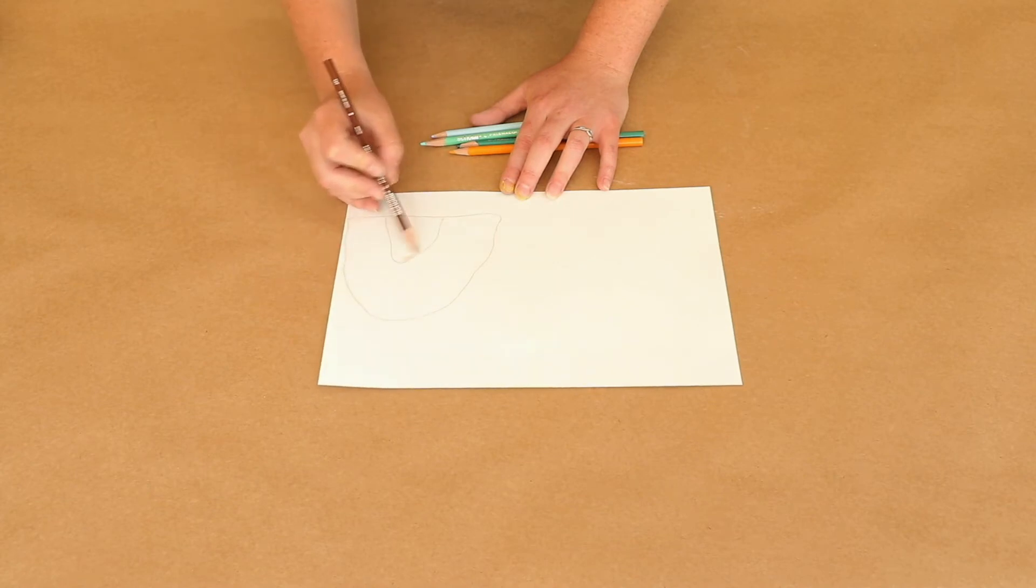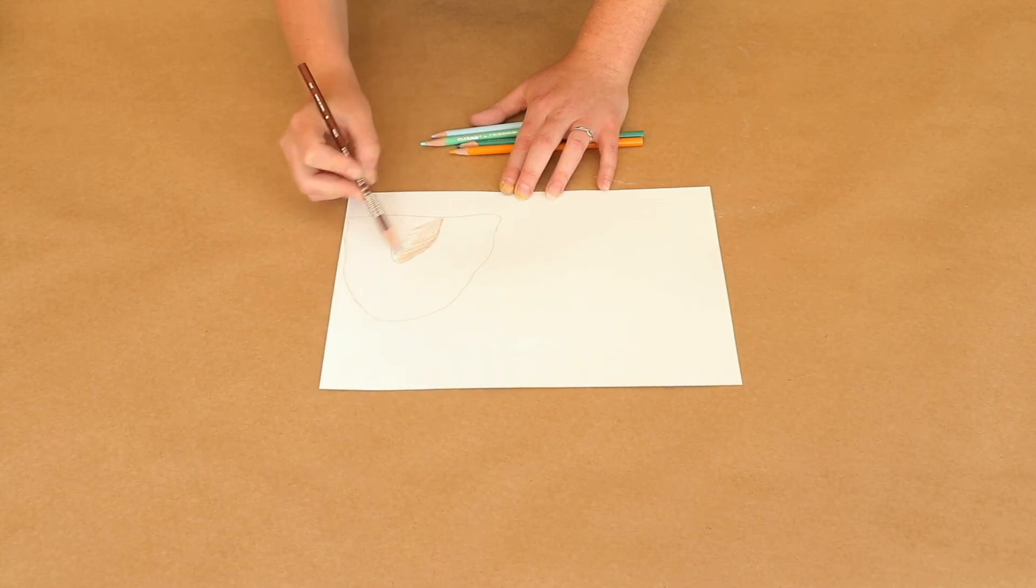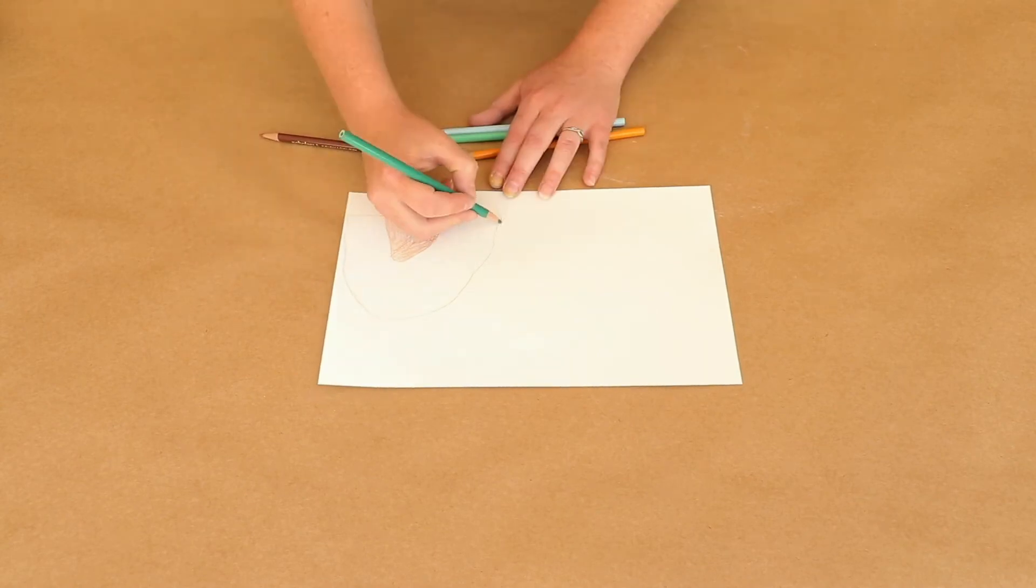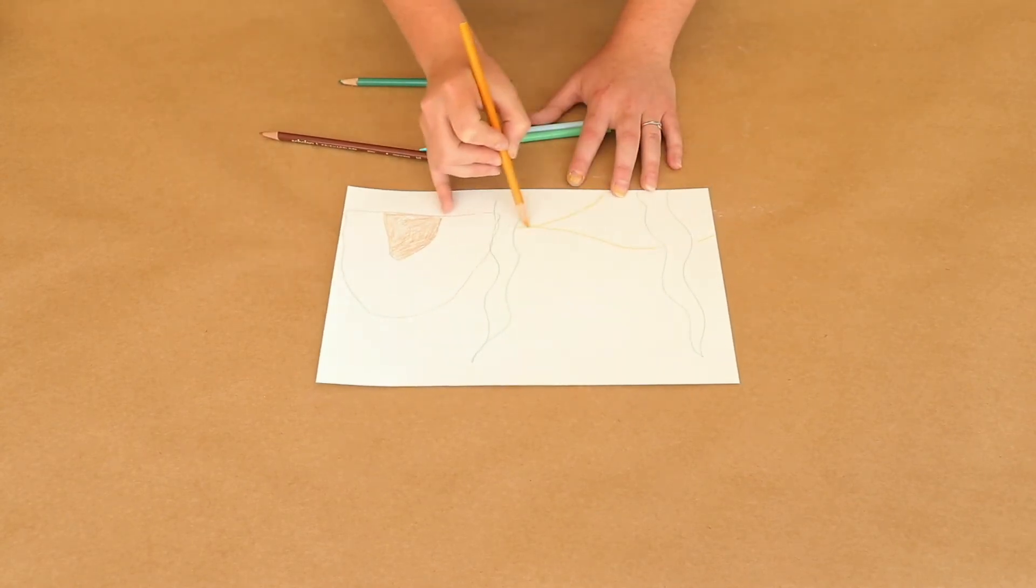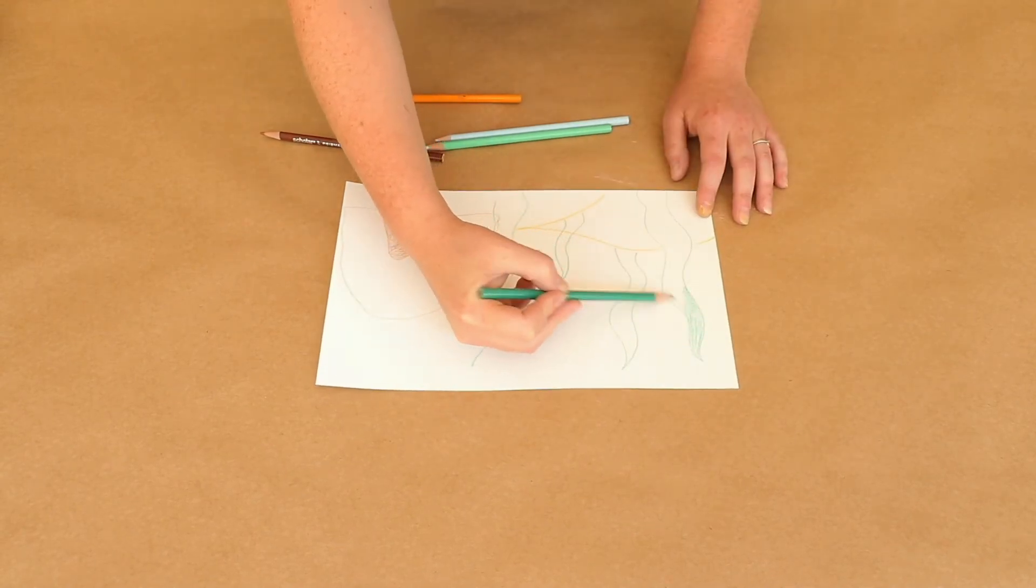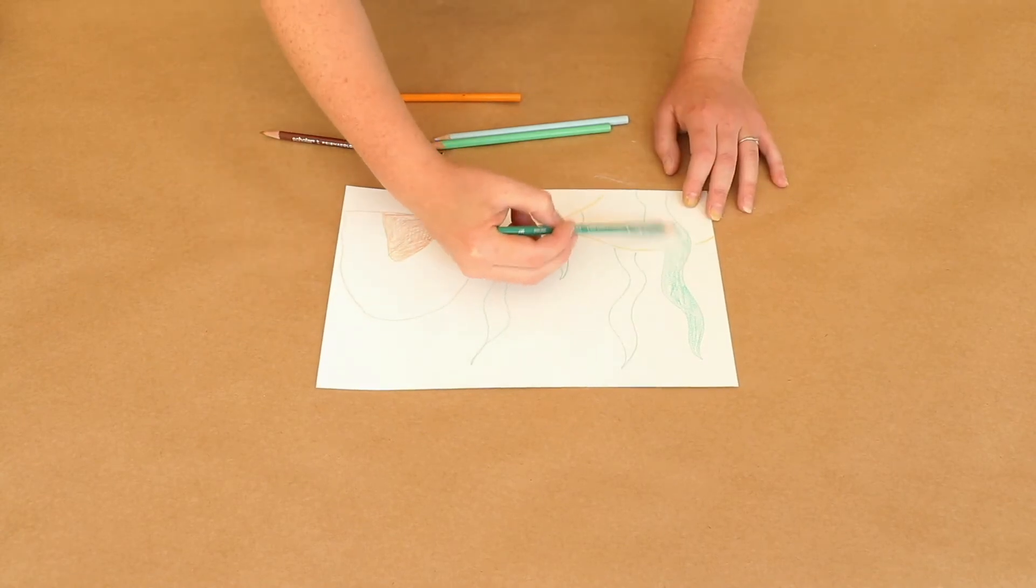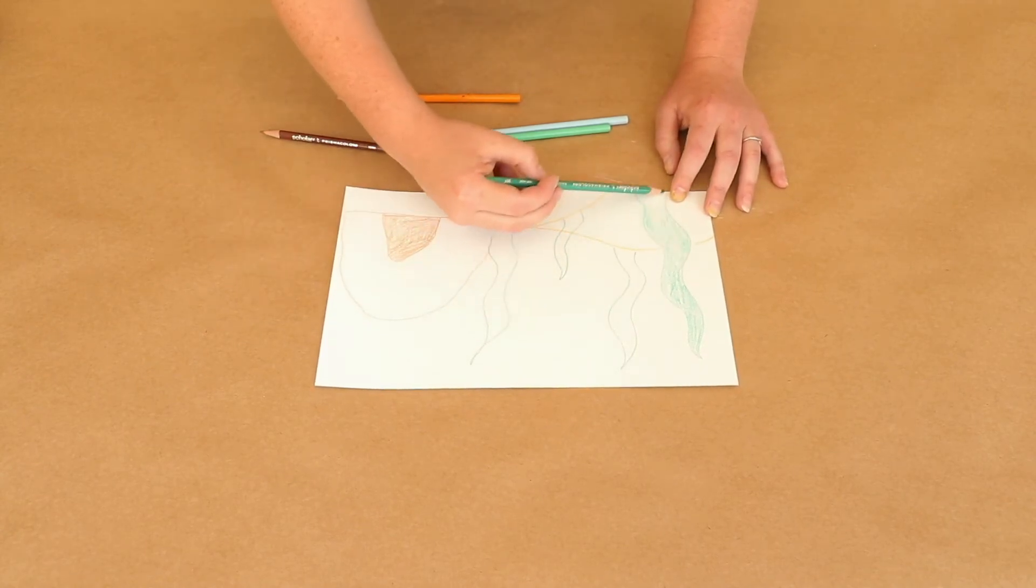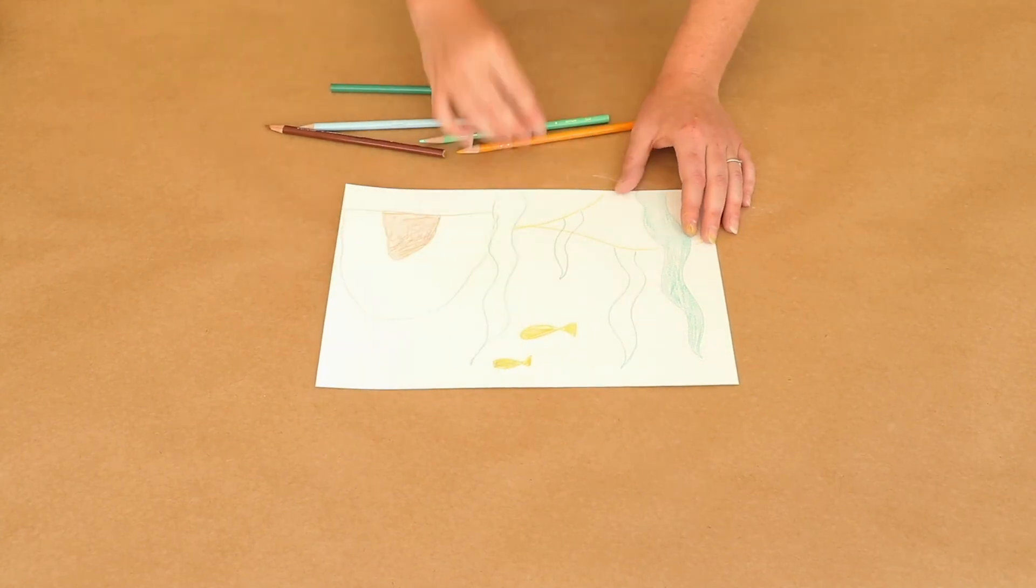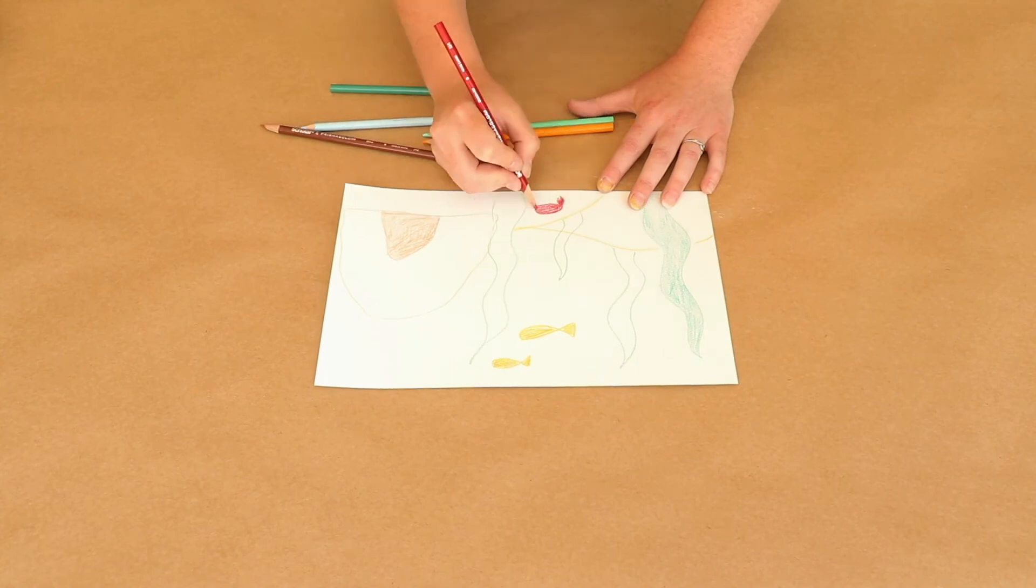We're going to start by doing a cave. This can be anything you want. Maybe they don't live in a cave, maybe they live in seaweed. It's up to you to be creative. You just want to color it all in. Maybe you have some fish, some little crabs at the bottom of the ocean, the bay.